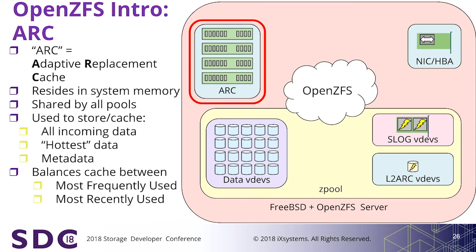For those not familiar with OpenZFS, here's a quick overview. We have our FreeBSD plus OpenZFS server with a front end NIC or HBA where data comes in, system memory a portion of which is used for ARC, and a bunch of disks — 7.2K hard drives in my case — as data VDEVs. That's where all the data resides when it's considered safe, protected by RAID and checksums. Those are in a Z pool. We also have some slog VDEVs and some L2ARC VDEVs.